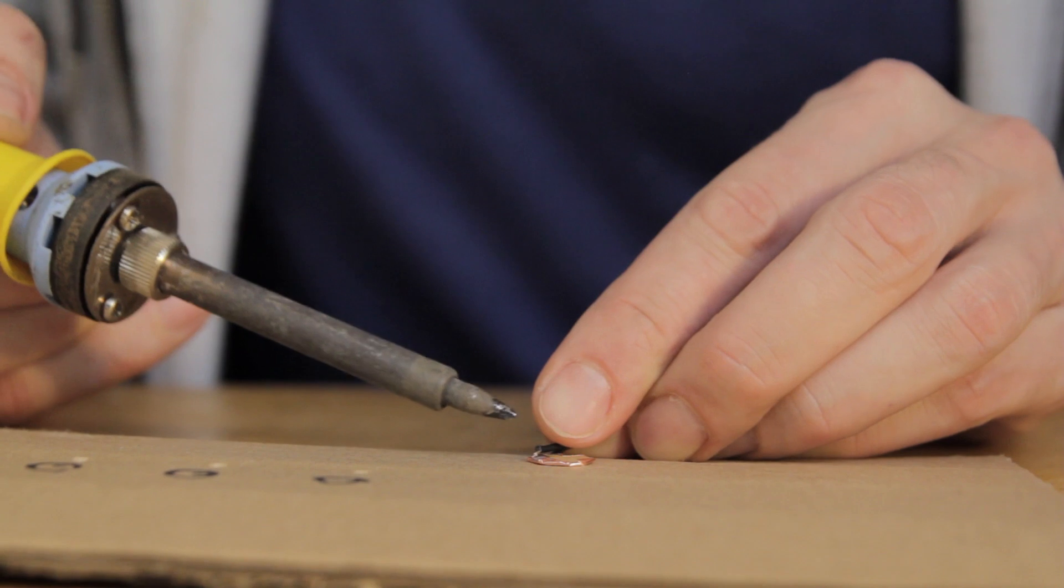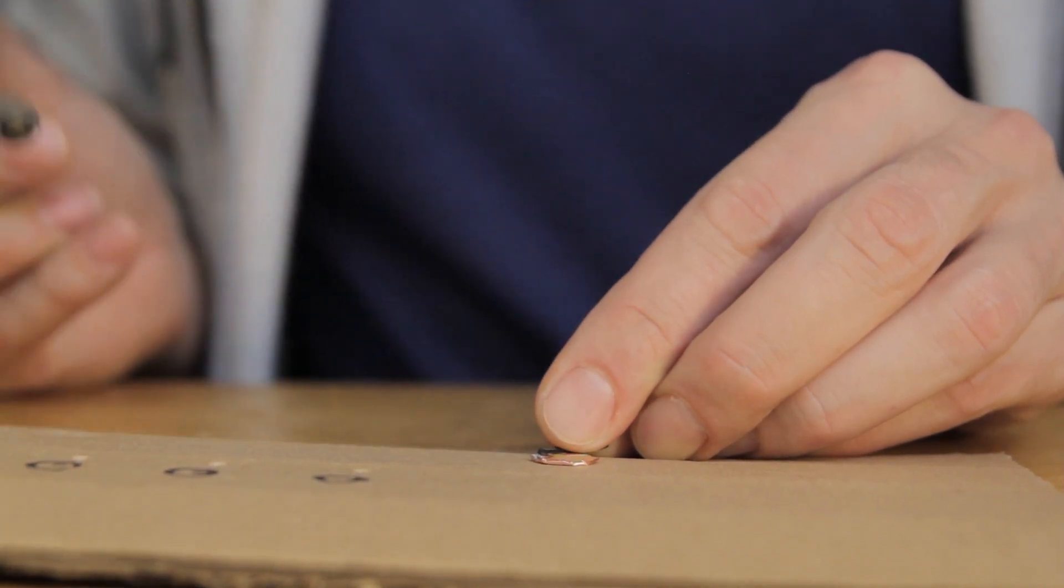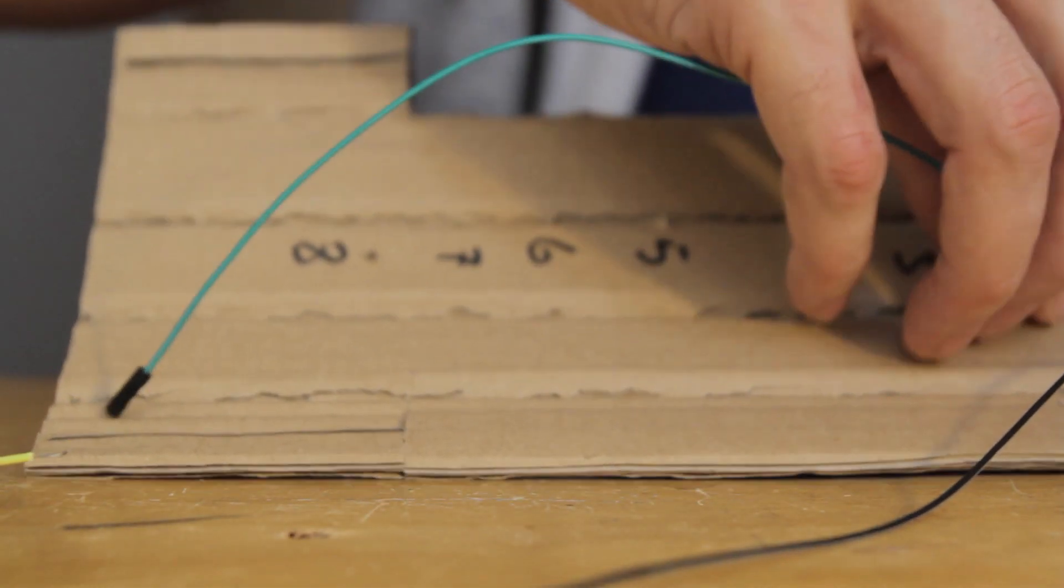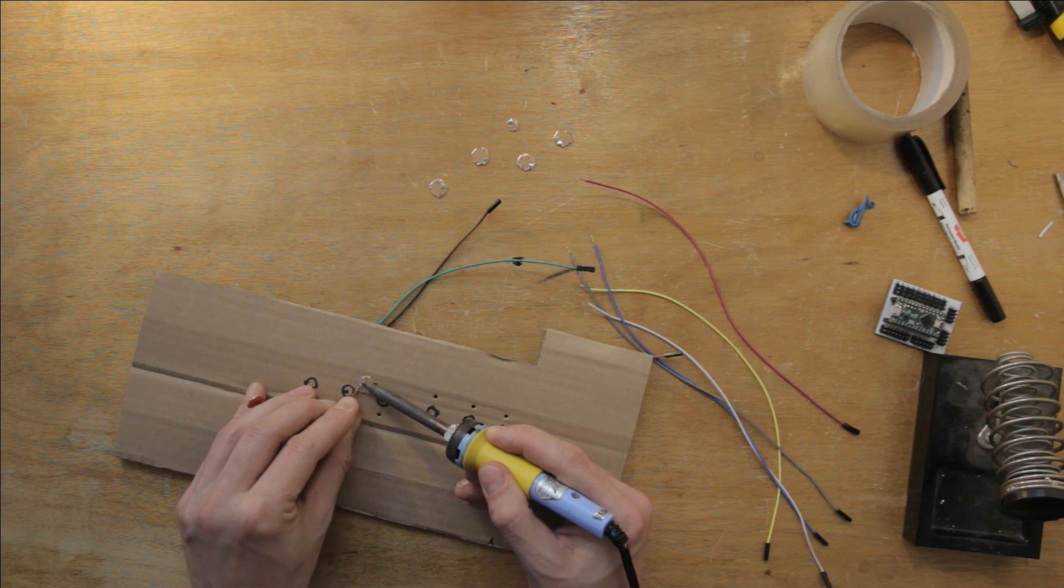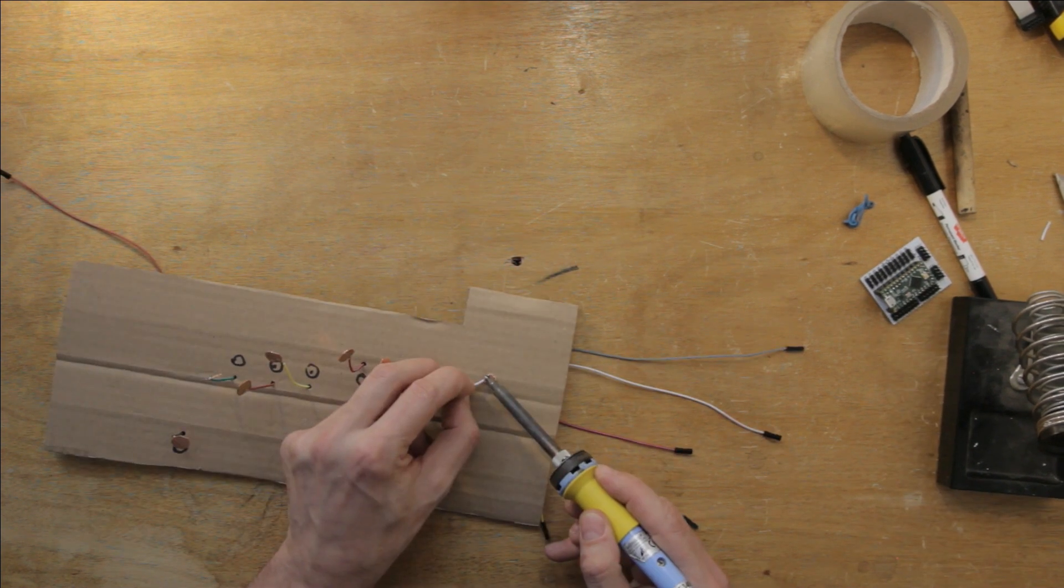Next, I pass a cable through one of the holes in the cardboard, lay down one of the keys next to it, bend down the cable until it touches the solder on the key, touch lightly with the tip of the soldering iron, and it's done. Then I repeat the process again, and again, and again, until all eight keys are soldered. There.